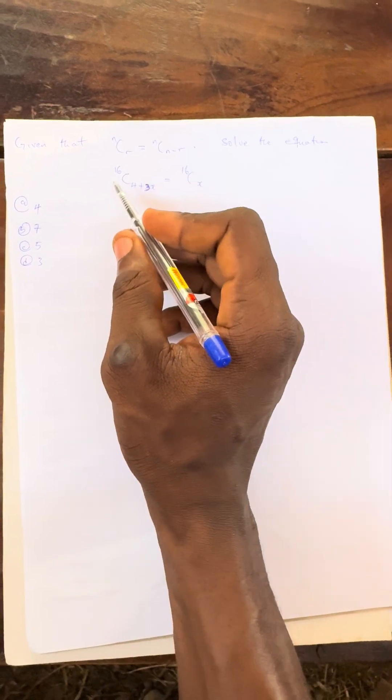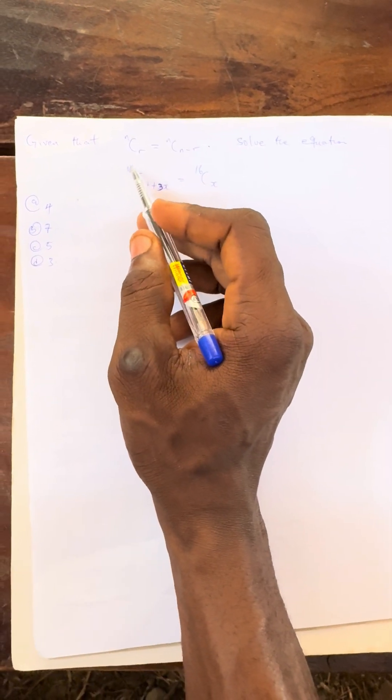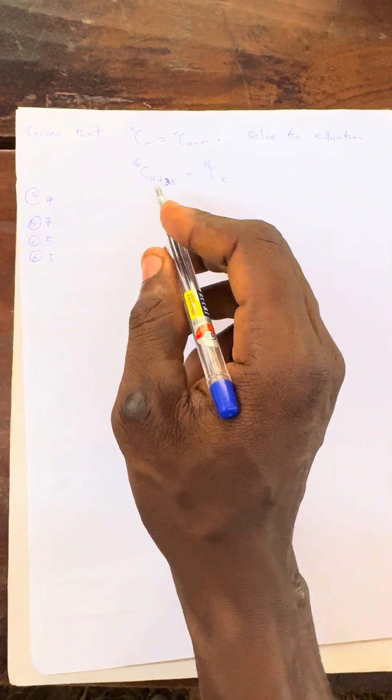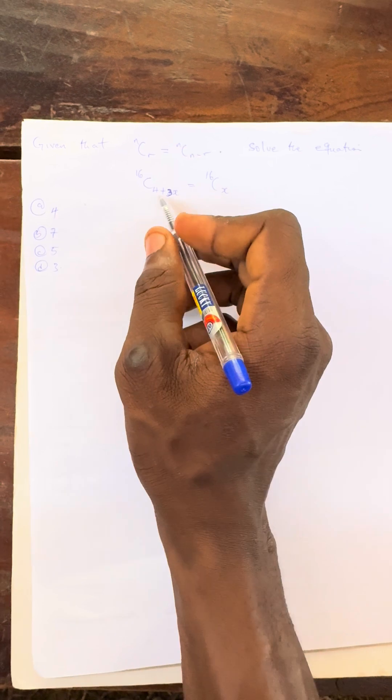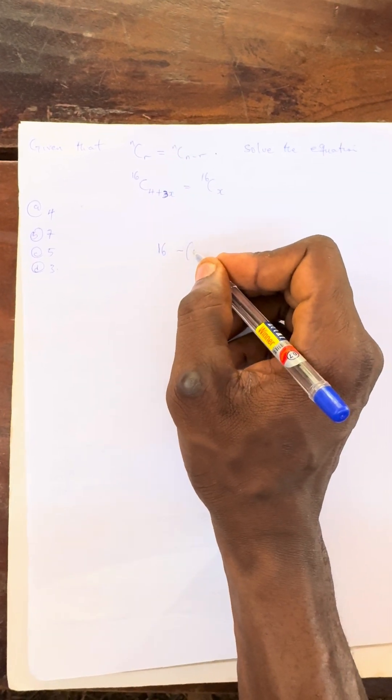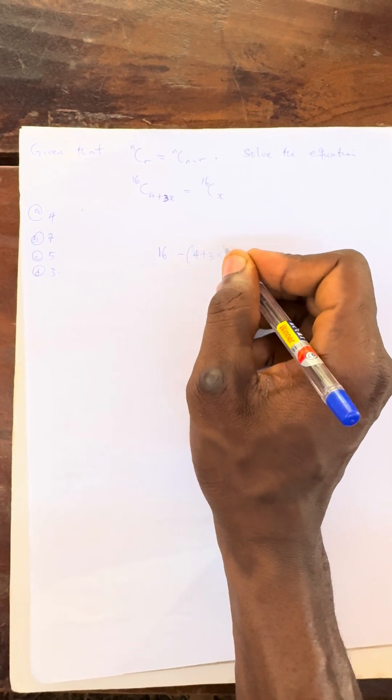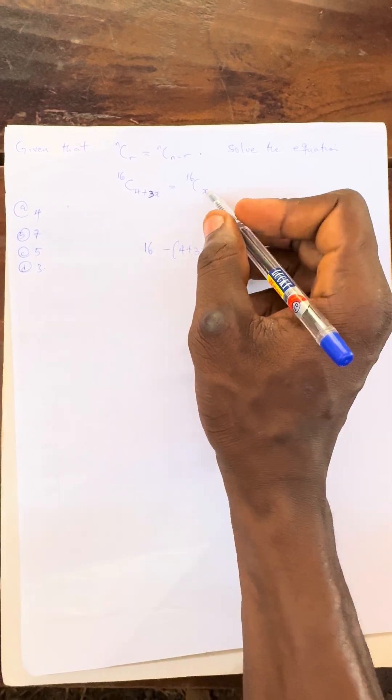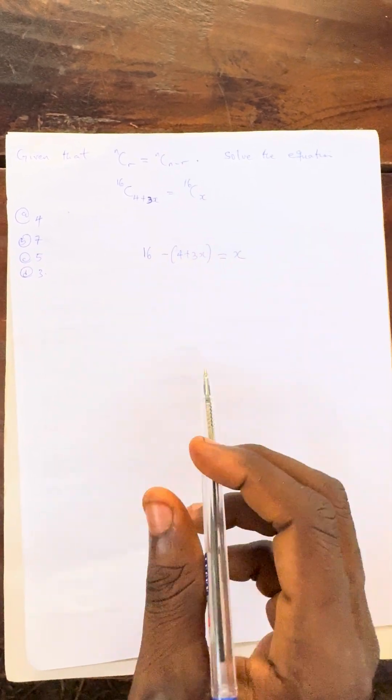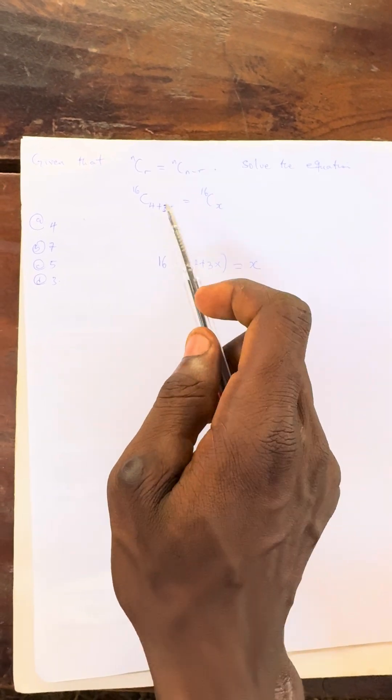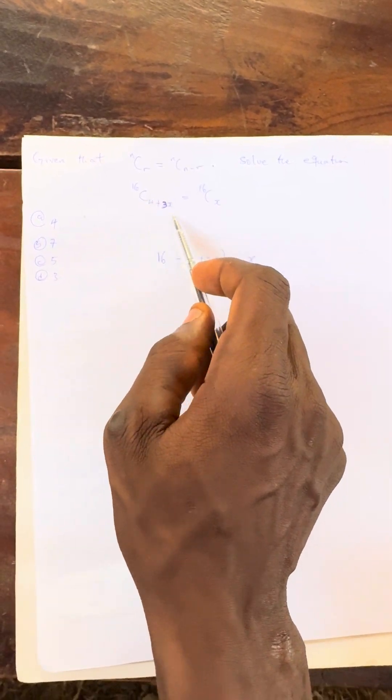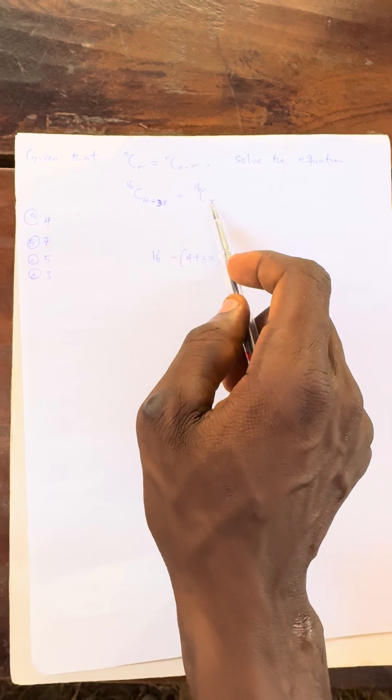The n method to this question, I will just take the n here which is 16. You can see that they have the same thing, so I will just have it to be 16 minus this one which is 4 plus 3x. Then I will now equate it to be what? x here again. You know these ones are the same, so I will pick one which is 16 minus this denominator. Then it must be equal to what? The x here.